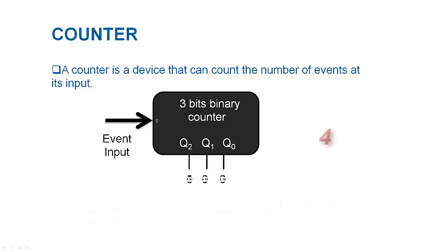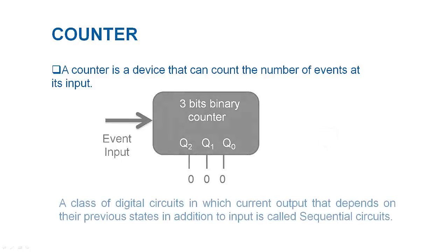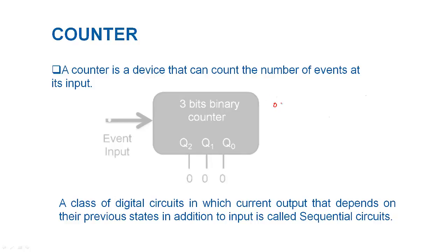Similarly it increments by 1 at every input until its maximum value 111 is reached and then it cycles to 000 with any further input. Another important thing to note that there is always a different output generated by the device for the same input. It means that the output is not dependent on the inputs only.